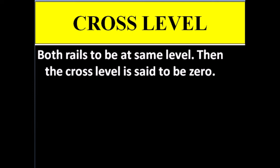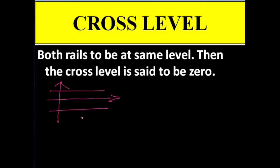The next concept is cross level. Cross level is measured across the track, whereas longitudinal level is measured along the track. You have the LH rail and the RH rail. In unevenness, you measure undulations separately for each rail, but in cross level you measure relatively — what is the level of one rail with respect to the other rail.